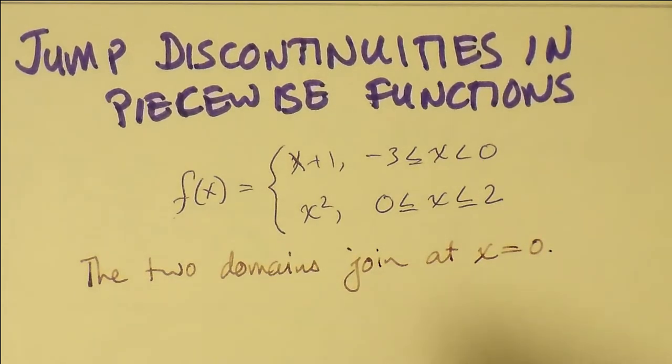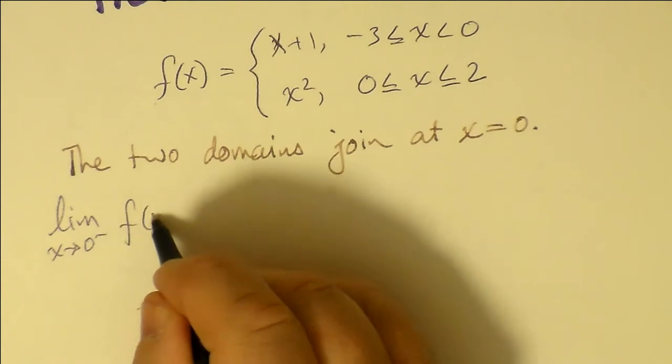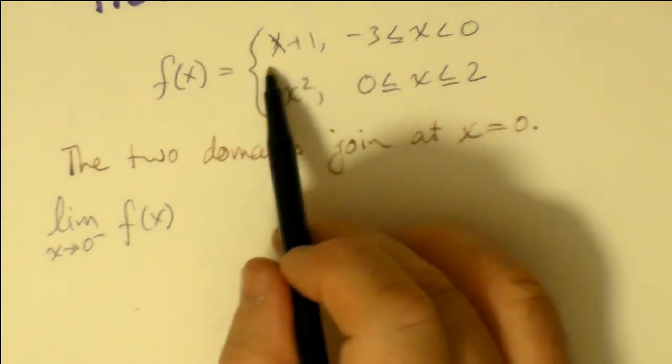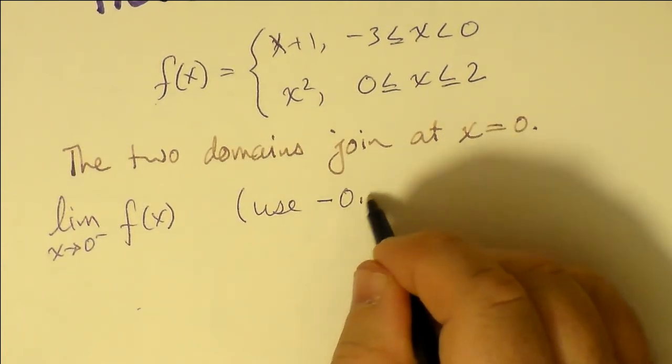So the two domains join at x equals 0. But while the domain is defined everywhere between minus 3 and plus 2, there still seems to be a break in the graph, and that break is where the pieces join. It is worthwhile to explore this break using limits approaching 0 from both right and left.